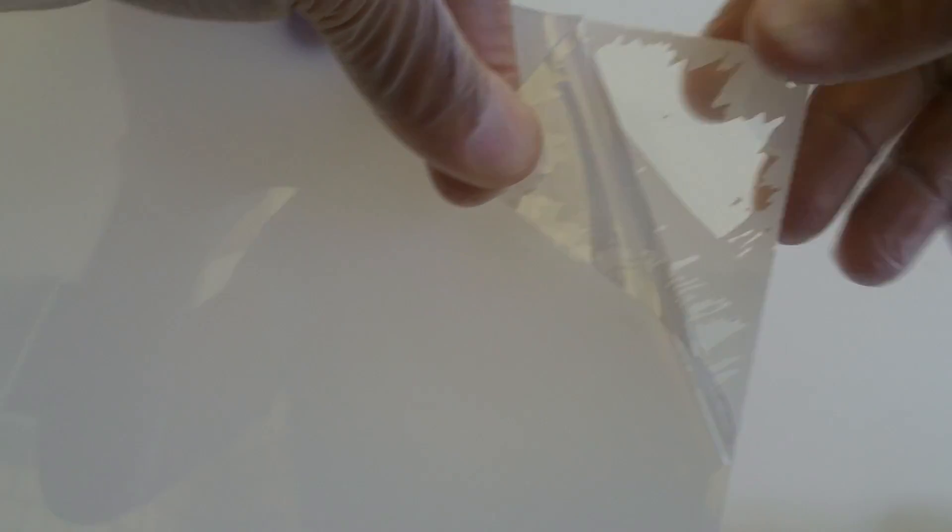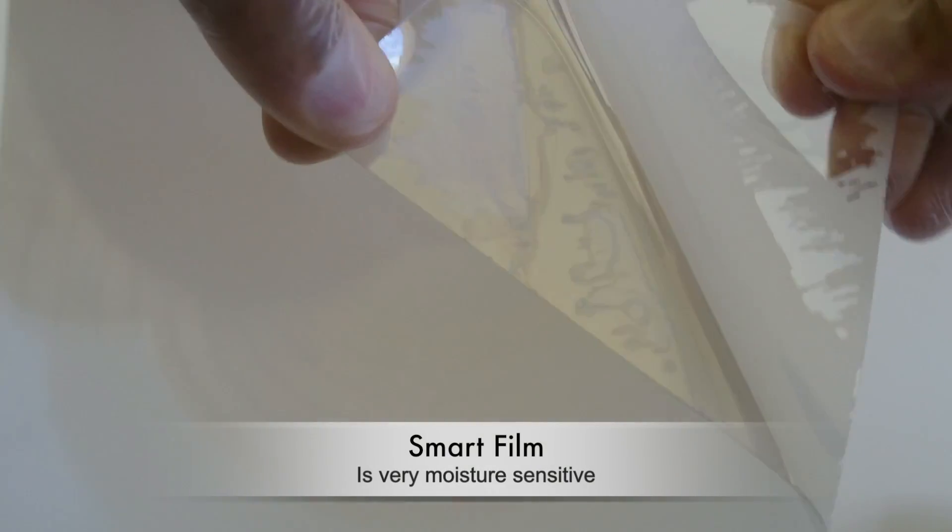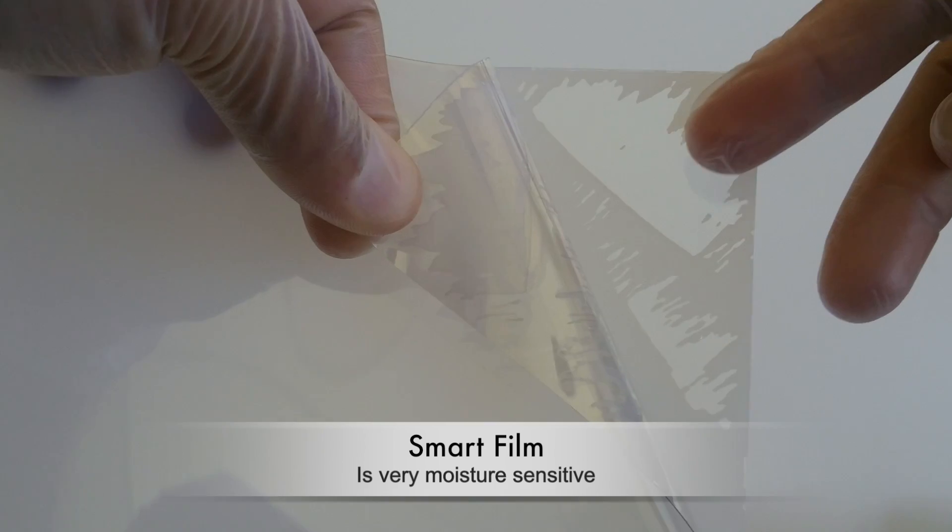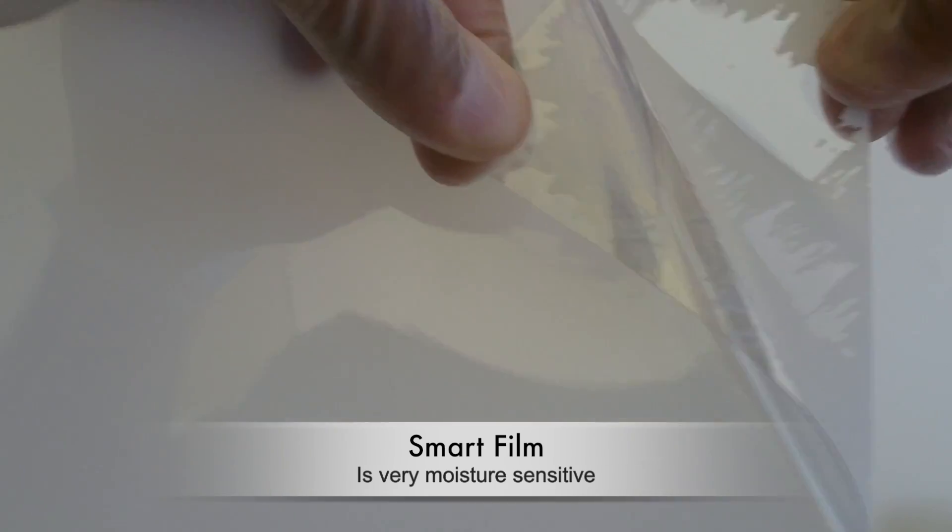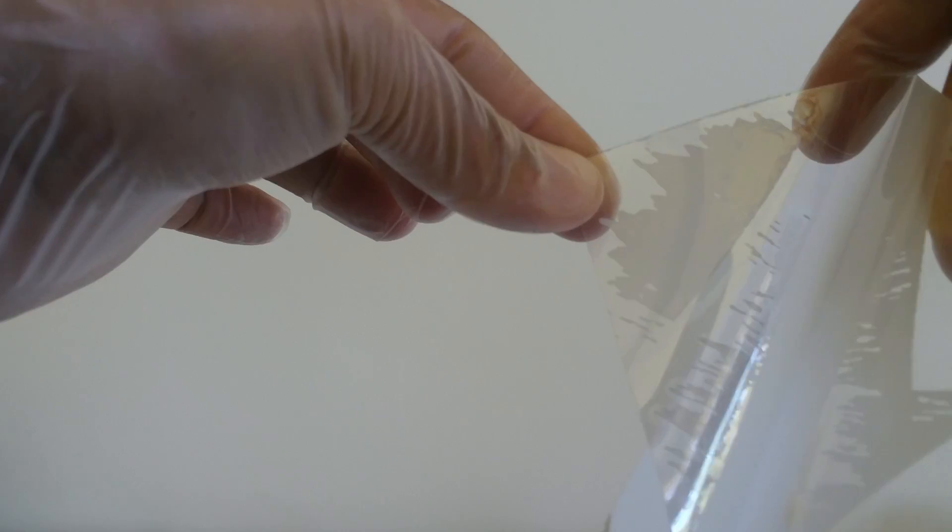What happens is because switchable film is very moisture sensitive, you can see that as it's come apart it's actually started to come away from the plastic, and this is not a good thing.